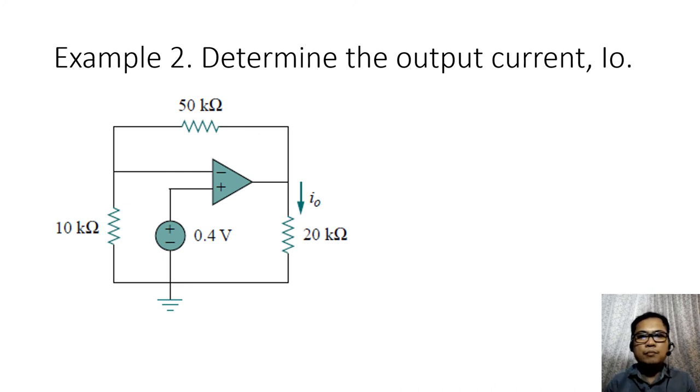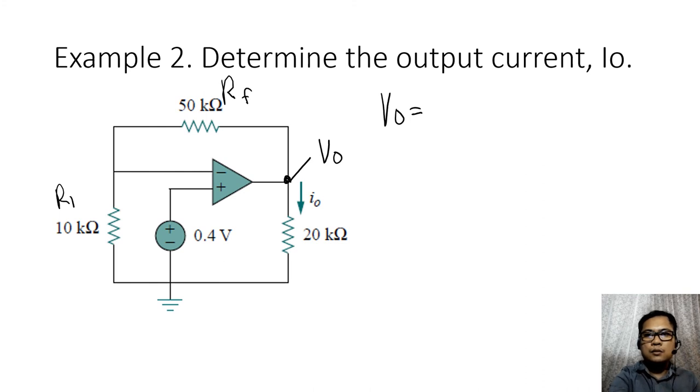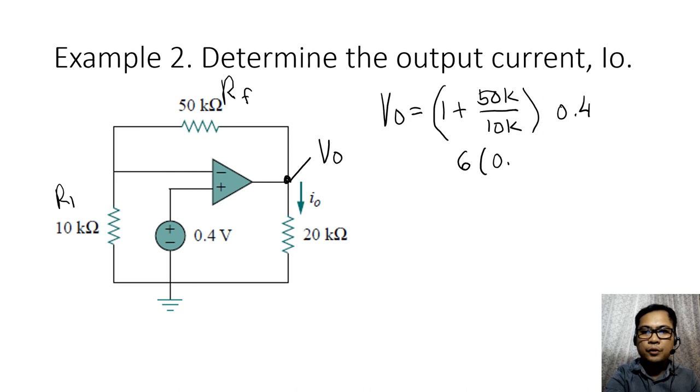Then let's try that with a sample problem. Determine the output current io. So this is a two-part solution. First compute for v out and then to get i out, simply use Ohm's law. So for v out, this is 1 plus 50k over 10k times your input voltage of 0.4. Simplifying, 50k over 10k is simply 5. 5 plus 1 is 6, so it's like 6 times 0.4. So this is equivalent to 2.4 volts.